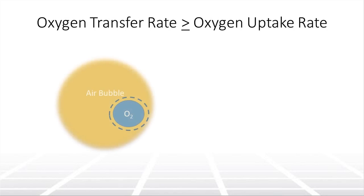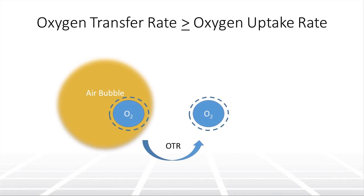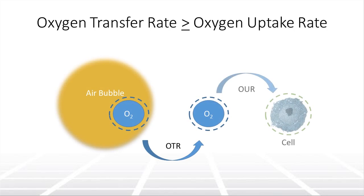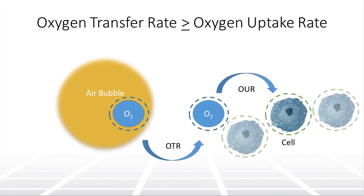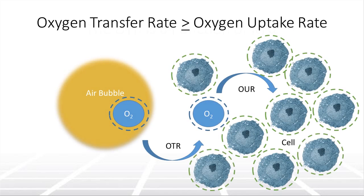The rate at which oxygen is transferred to the media is known as the oxygen transfer rate, or OTR, which remains effectively constant for a set of bioreactor conditions. The rate at which the cells in the culture utilize and uptake oxygen is known as the oxygen uptake rate, or OUR. Initially the OUR will be low but will increase as the cell density increases, until the OTR becomes the limiting factor.